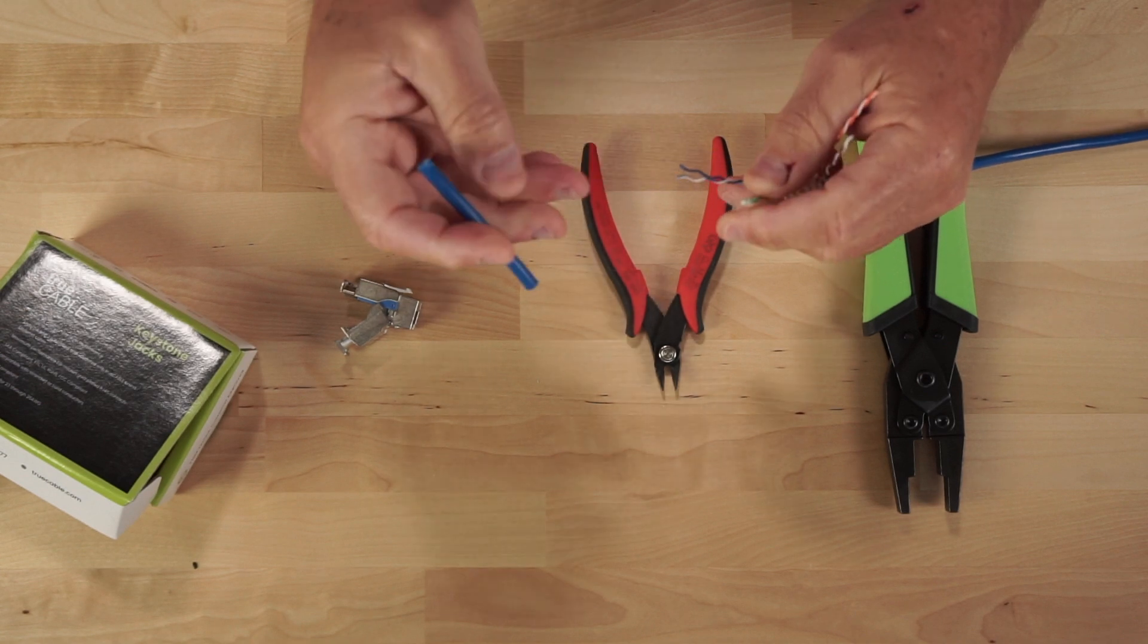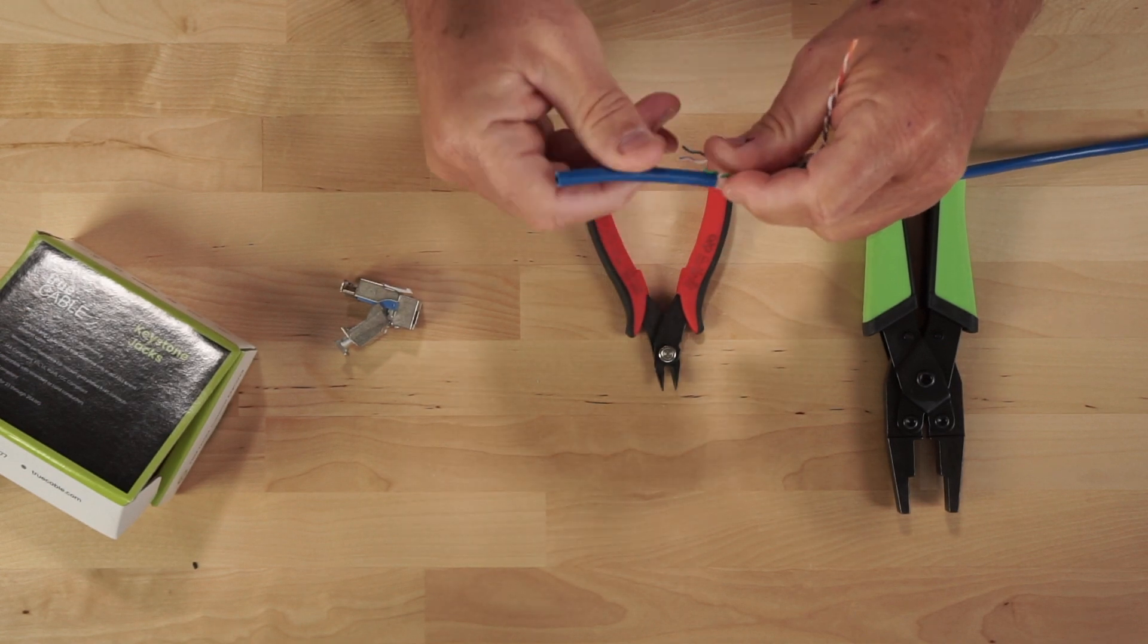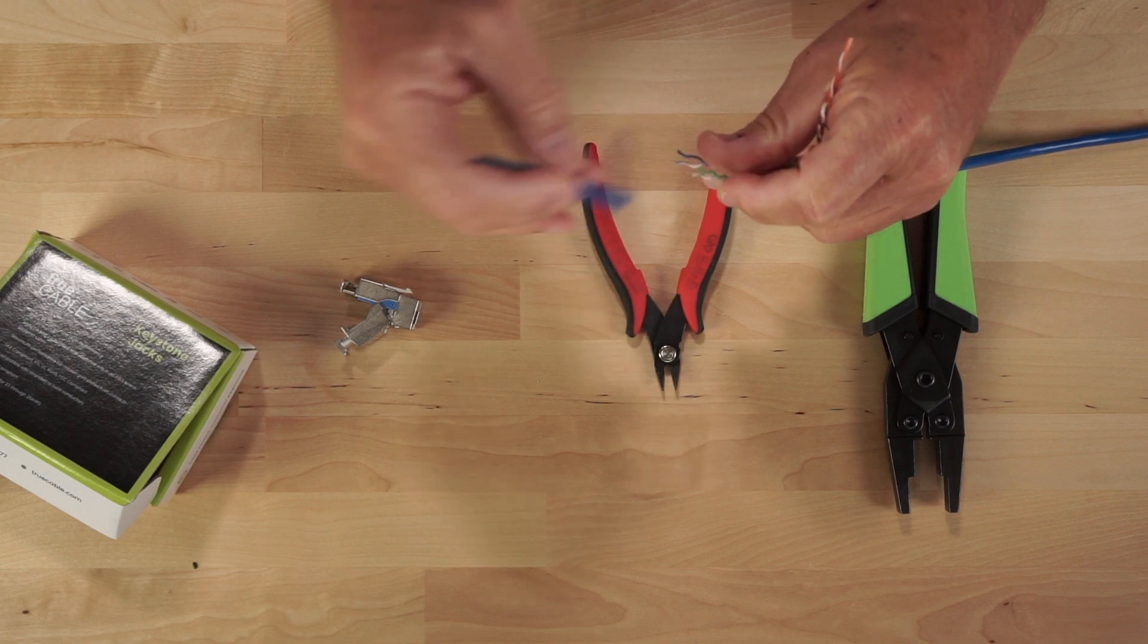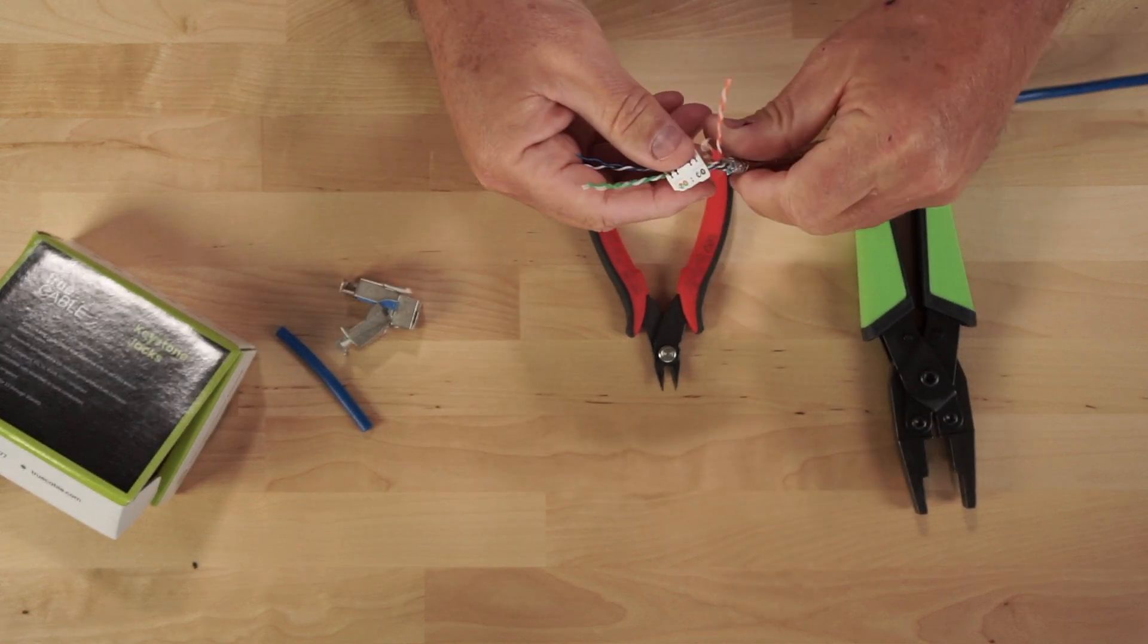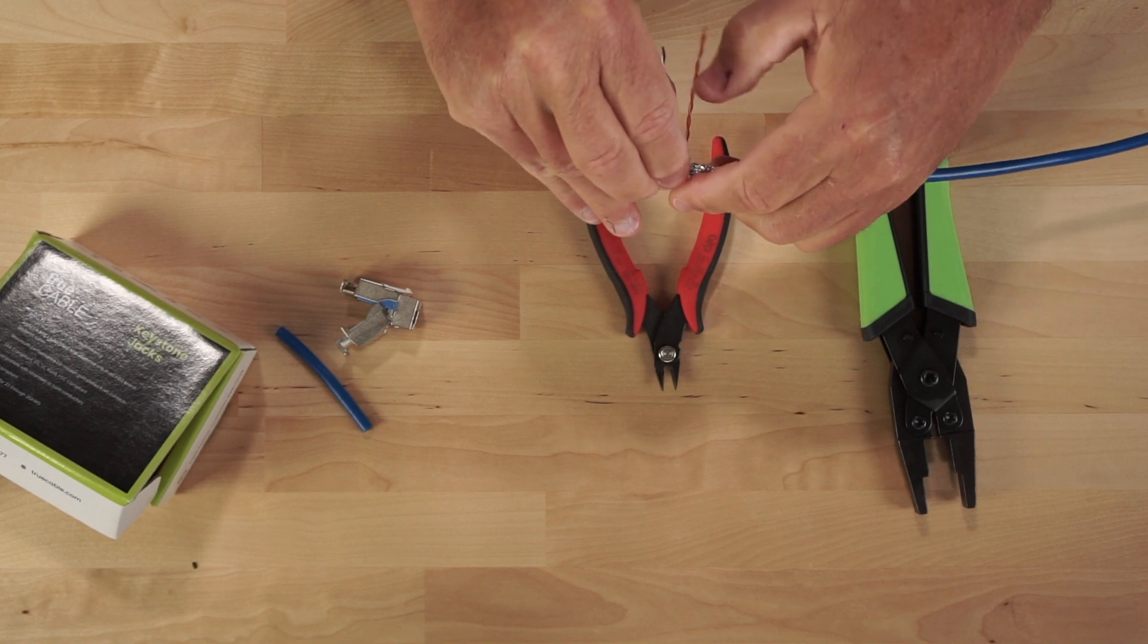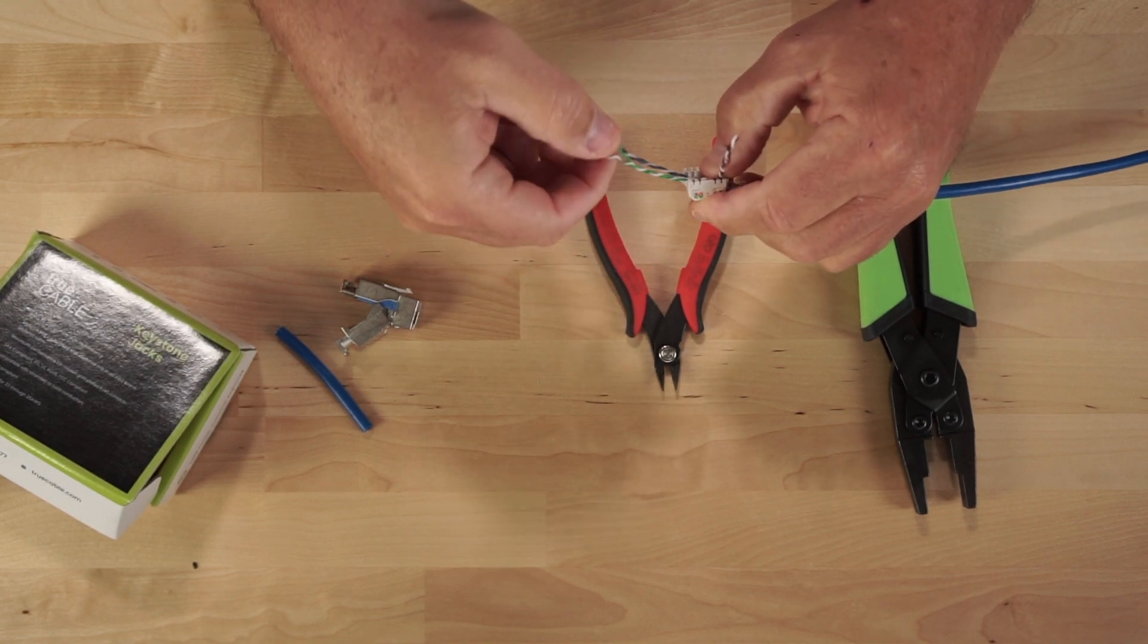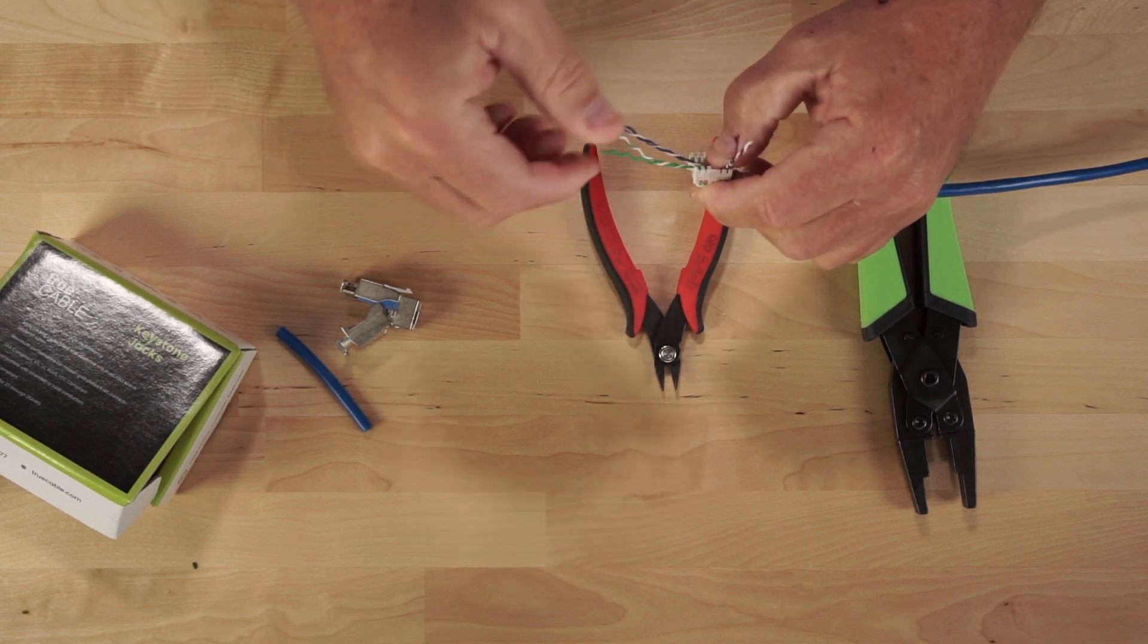I'm not going to open them up all the way because we want to leave them twisted at least a half inch to the punch down point. So we'll get the green pair untwisted to a point where we still have a good enough twist.